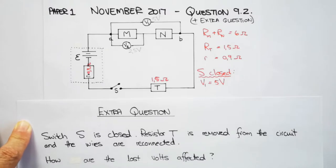I've added an extra question to question 9.2. Switch S is closed. Resistor T is removed from the circuit and the wires are reconnected. So this resistor has been removed completely. The question is: how are the lost volts affected? Do the lost volts remain the same? Will they decrease or will the lost volts increase? So when you get a question like this, do not give the answer straight away. Work through the explanation so that you do not guess the answer. You have to be able to reason it out. A question like this could count about four marks.